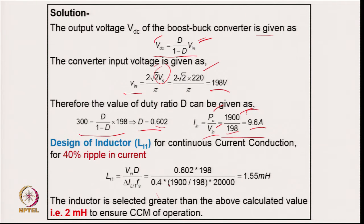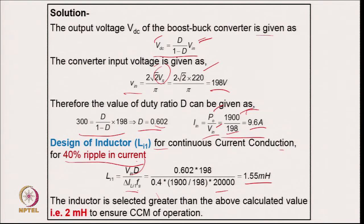The Cuk converter has three elements: input inductor, output inductor, and energy transfer capacitor. Designing the input inductor for CCM with 40 percent current ripple: the relation uses the voltage applied across the input inductor during the on-period, the maximum current ripple, and the switching frequency. Putting in values gives 1.55 mH. To maintain CCM over a wide operating range (since higher voltage means lower current and potentially larger ripple), the inductor is selected as 2 mH.